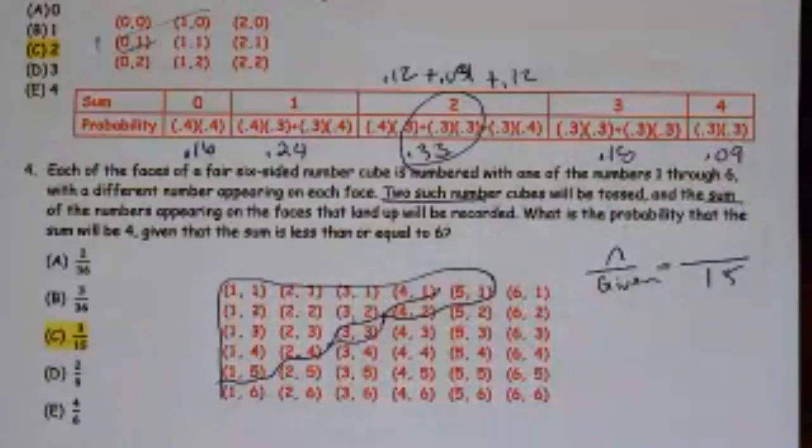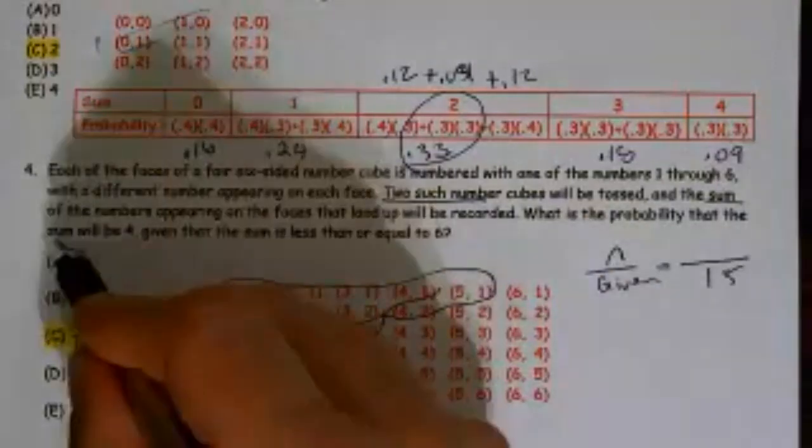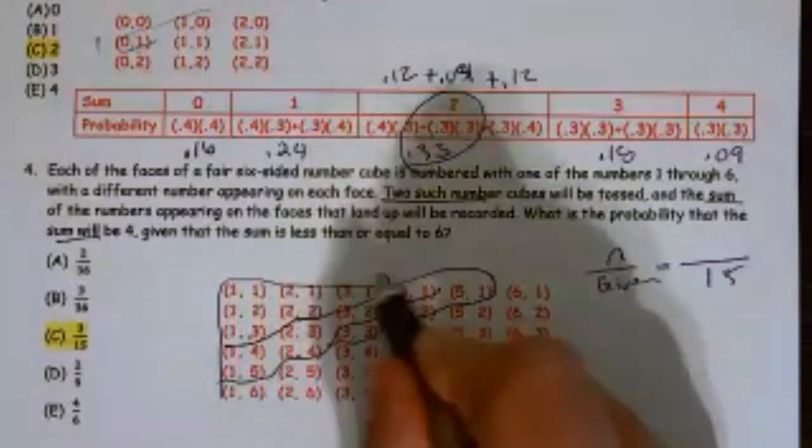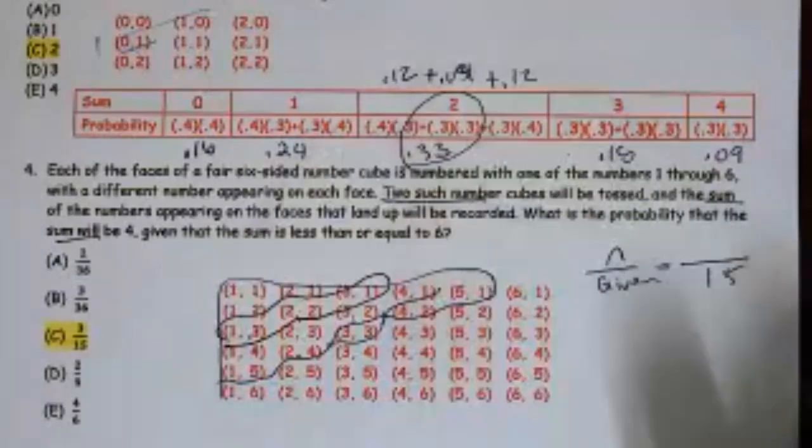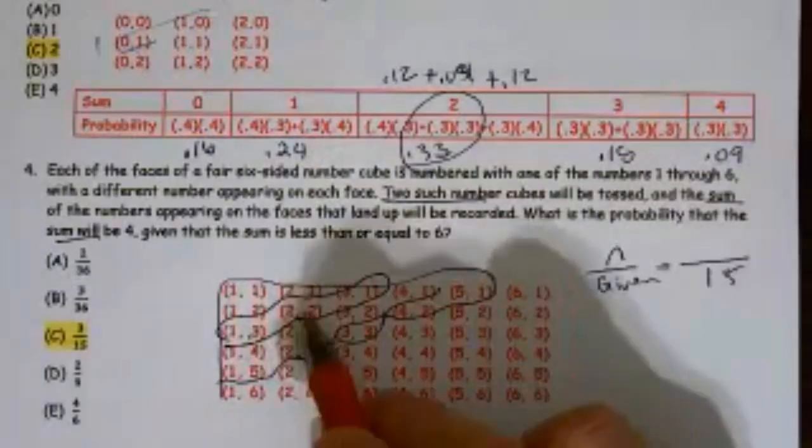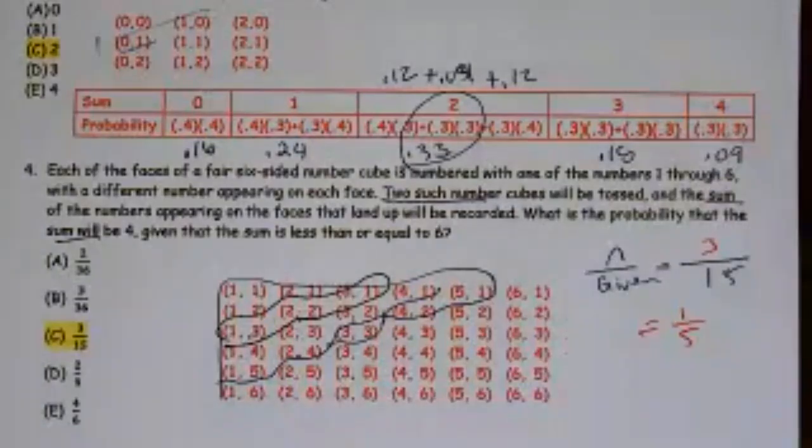What is the probability the sum will be 4? Well, that's 1, 3, 2, 2, and 3, 1. In that case I have 3 over 15. They were nice and didn't reduce it, but I wouldn't have been surprised if they had reduced it.